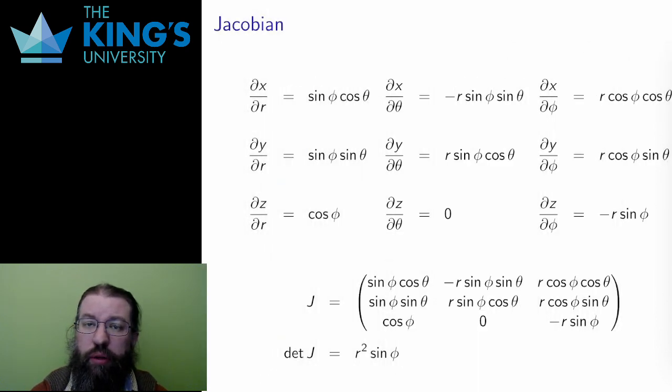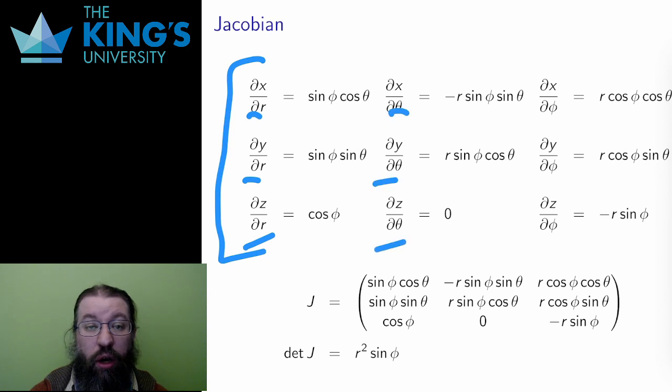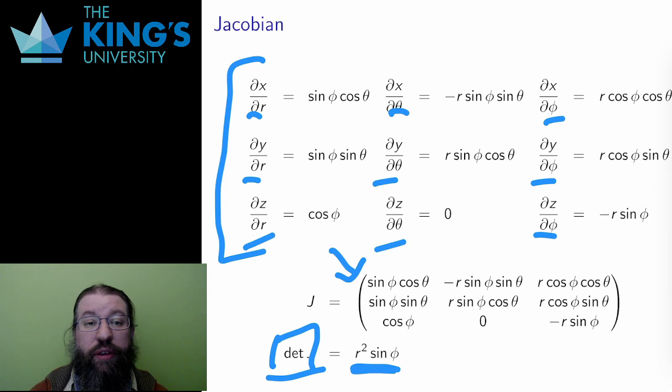What is the Jacobian? How does the volume change? Well, I go through the whole process again. I take all three transformations for x, y, and z, and differentiate in r, theta, and phi. Here are all those partial derivatives. I put them in a matrix, the Jacobian matrix. I take the determinant, which is quite a long calculation that I haven't shown here. The result is the Jacobian of r squared sine phi. Notice that there is an r squared here. This makes sense for the units. Phi and theta have no units, so multiplying by distance twice restores the units that are expected.